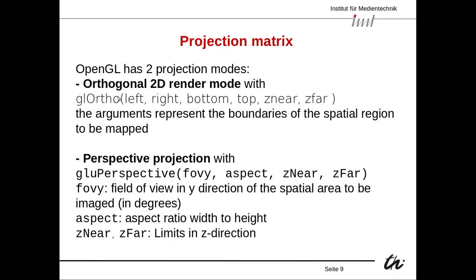With GL ortho you define in the arguments basically the piece of space you want to project onto your screen. Since the screen has a limited size, you need to define what part of the 3D world to project. You define the boundaries: the left boundary, the right boundary, the bottom and top boundary, and also the depth distance — z near and z far. Only points within these boundaries are projected onto our screen.